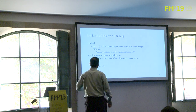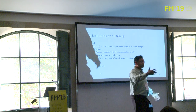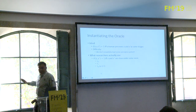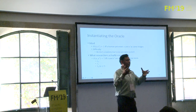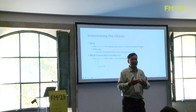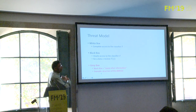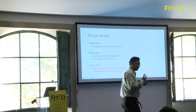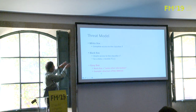From a threat model point of view, you can have white box access — the attacker knows everything about the model including weights — or a black box attack where you only get output labels. There's a lot of gray box in between.